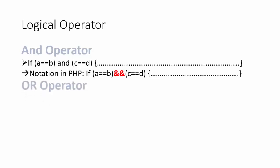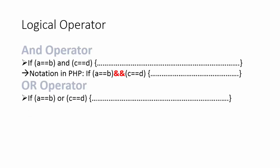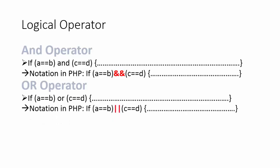Then we have the OR operator, which is also a logical operator. We use the OR operator when we need to choose one condition between two. So if a == b OR c == d, the code will be processed as long as any one of the scenarios is true. The notation for the OR operator is the pipe symbol, shown in red.